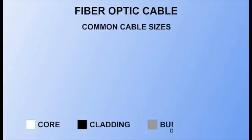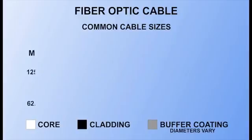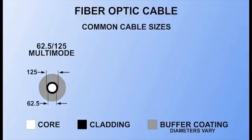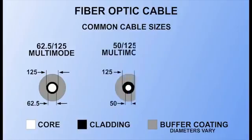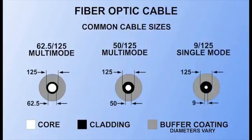Fiber specifications list the core and cladding diameters as a ratio. Multi-mode fiber is usually either 62.5 by 125 microns or 50 by 125 microns. Single-mode fiber is commonly 9 by 125 microns.